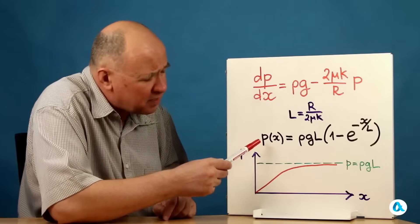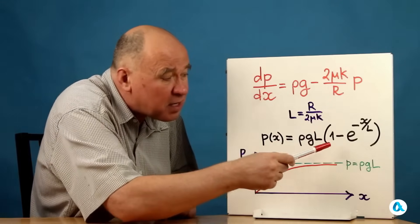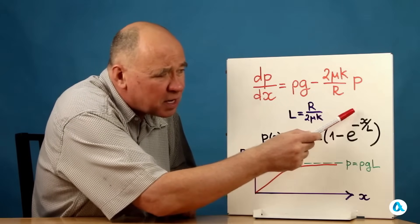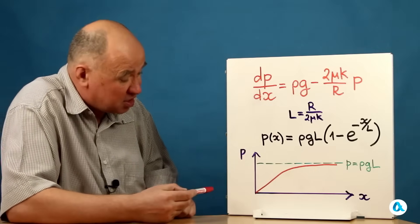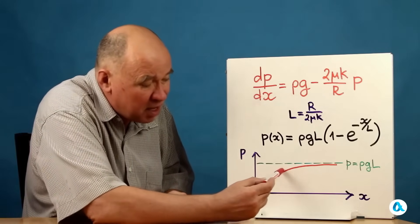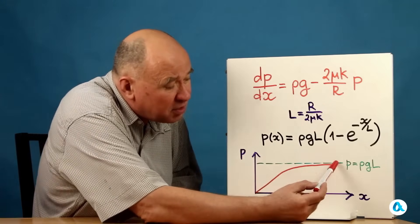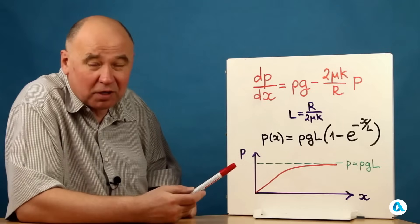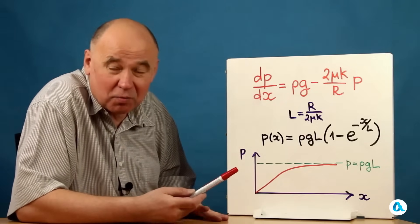So, the solution looks like this. With depth, the pressure increases p(x) as ρgL multiplied by this bracket (1 minus the exponent, where the exponent has minus x divided by L). Well, I drew it here, this solution on the graph. At first, the pressure increases linearly as in hydrostatics. And then, it approaches an asymptotic value p equals ρgL. And beyond this pressure, the sand can no longer exert any force on the bottom of this pipe.